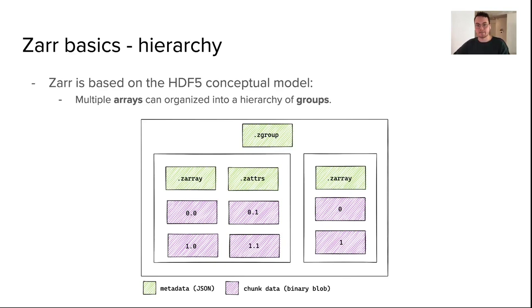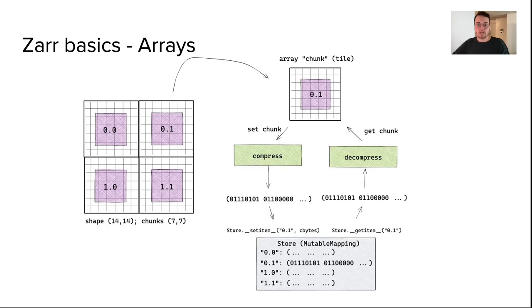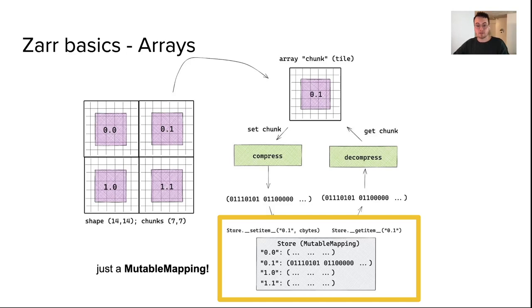For a given array, its shape, chunk shape, and compression strategy is all that is needed to be able to access that chunk from a given store. A store is simply a Python mutable mapping that, when given a unique key, returns the desired chunk.